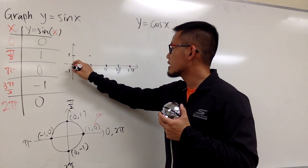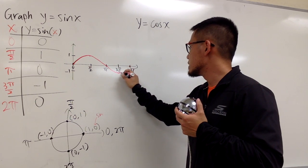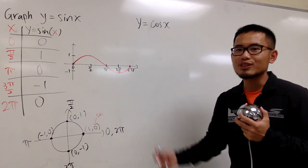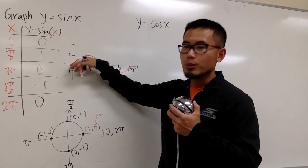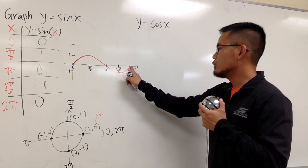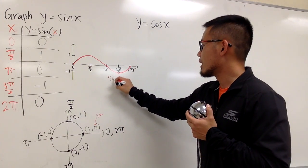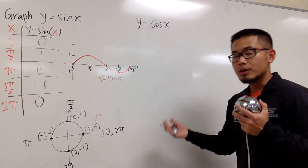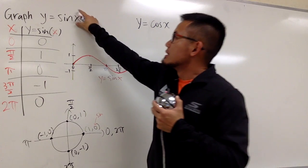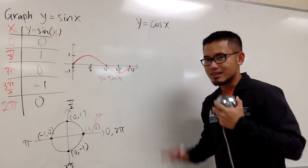At the end, just connect the dots with a nice curve. And that's one period of the sine function. Of course, if you want to continue before or after, you just extend the wave in either direction. Here is the sine function, y equals sine. I'll make more videos later — for example, what if we have more things inside or outside of the sine?